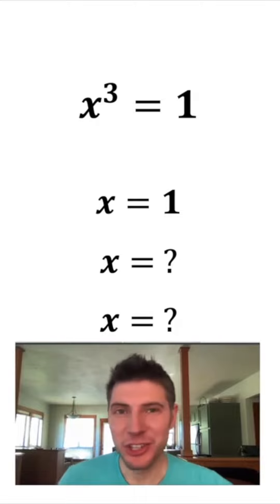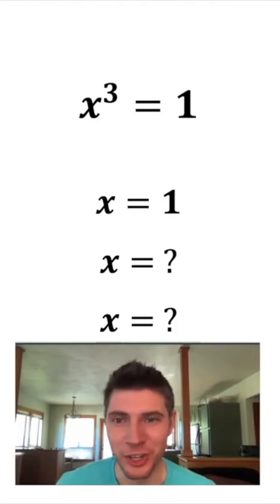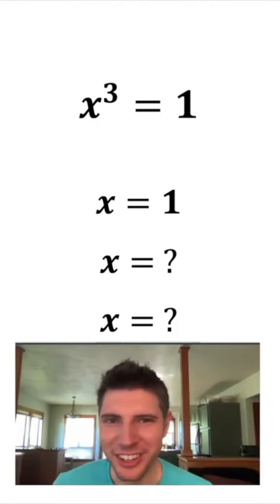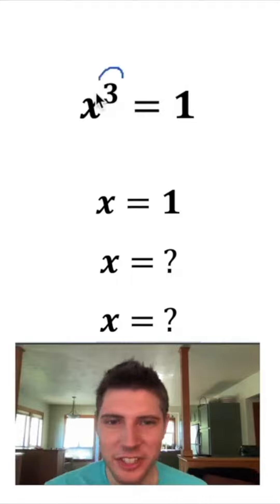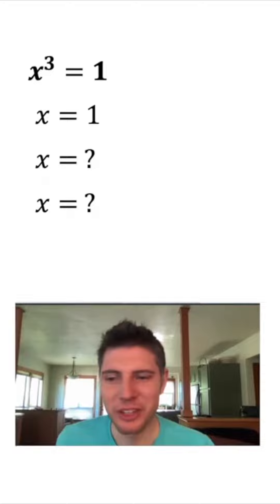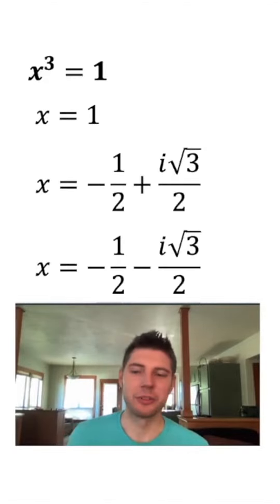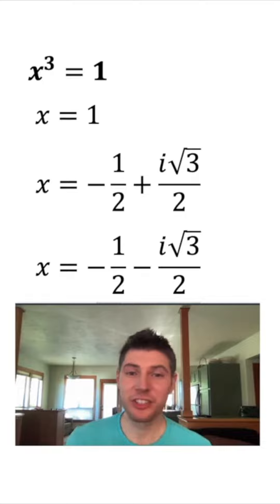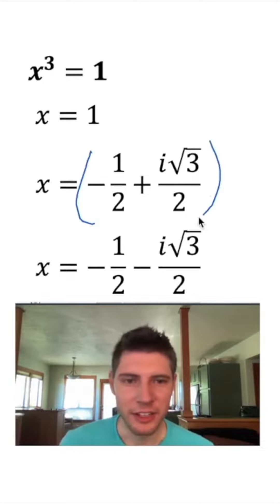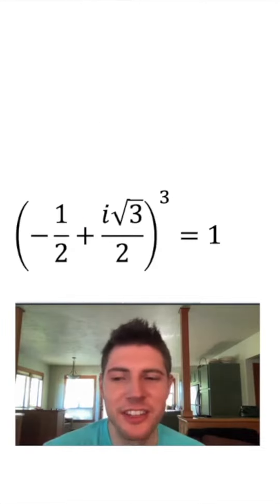If we have x cubed equals 1, we know one answer is x equals 1. But what are the other answers? Because this has a degree of 3, there should be 3 answers. There are no real answers that work, but there are complex answers that use imaginary numbers. Both of these complex numbers solve it. Let's take the top one and cube it — multiplying it by itself 3 times — to verify it equals 1.